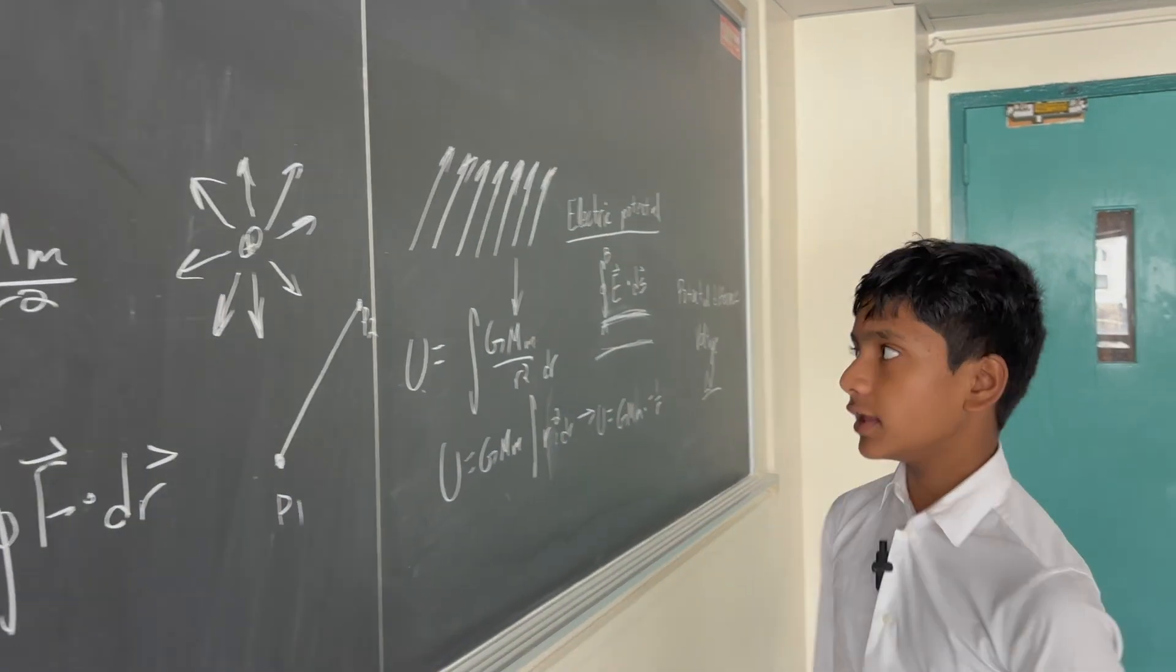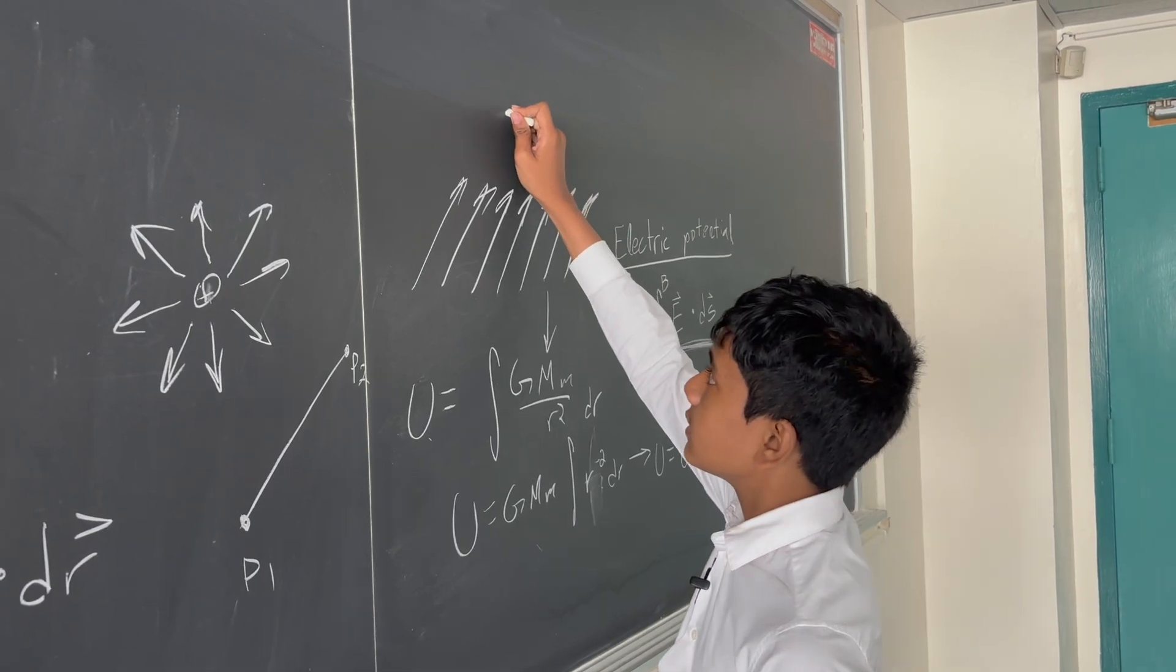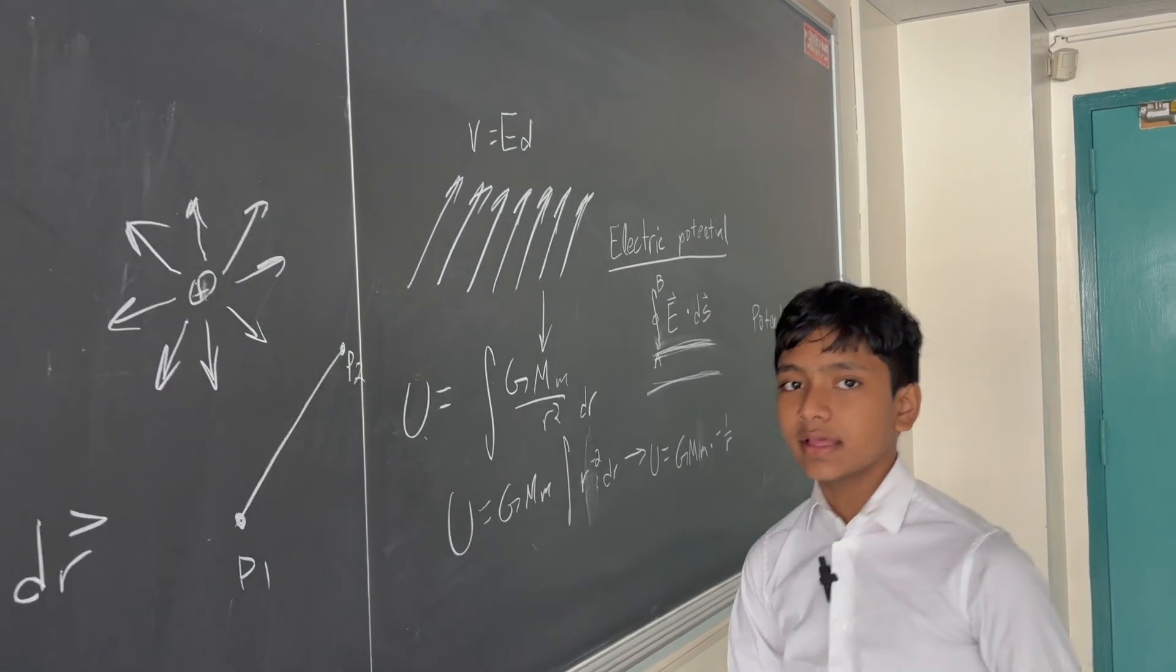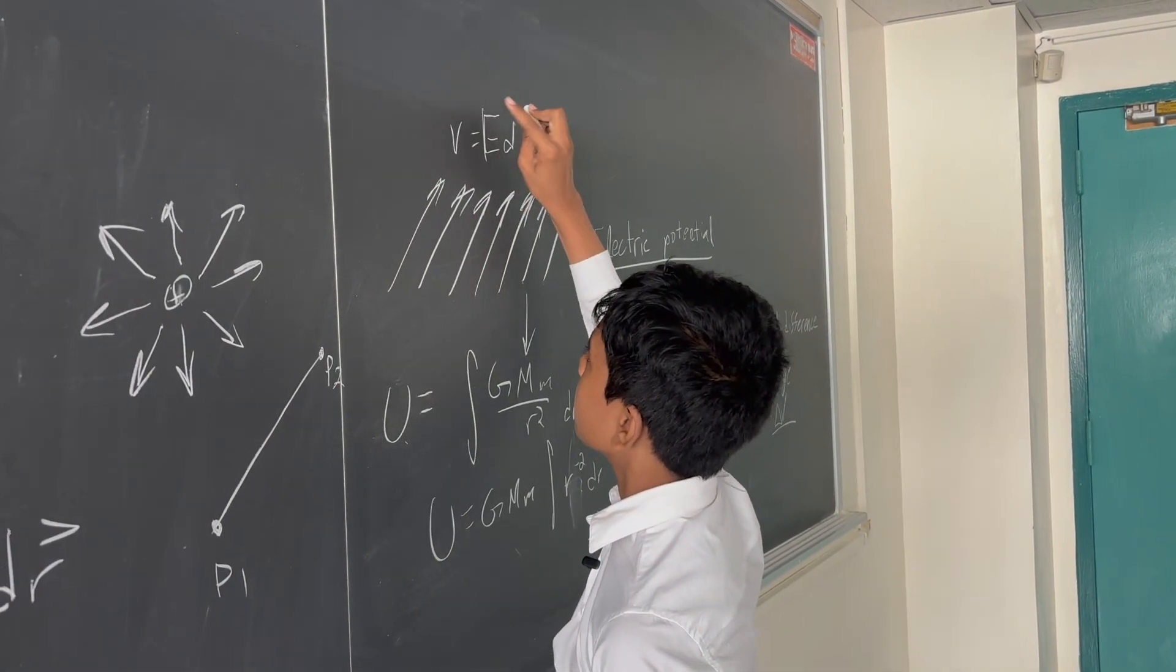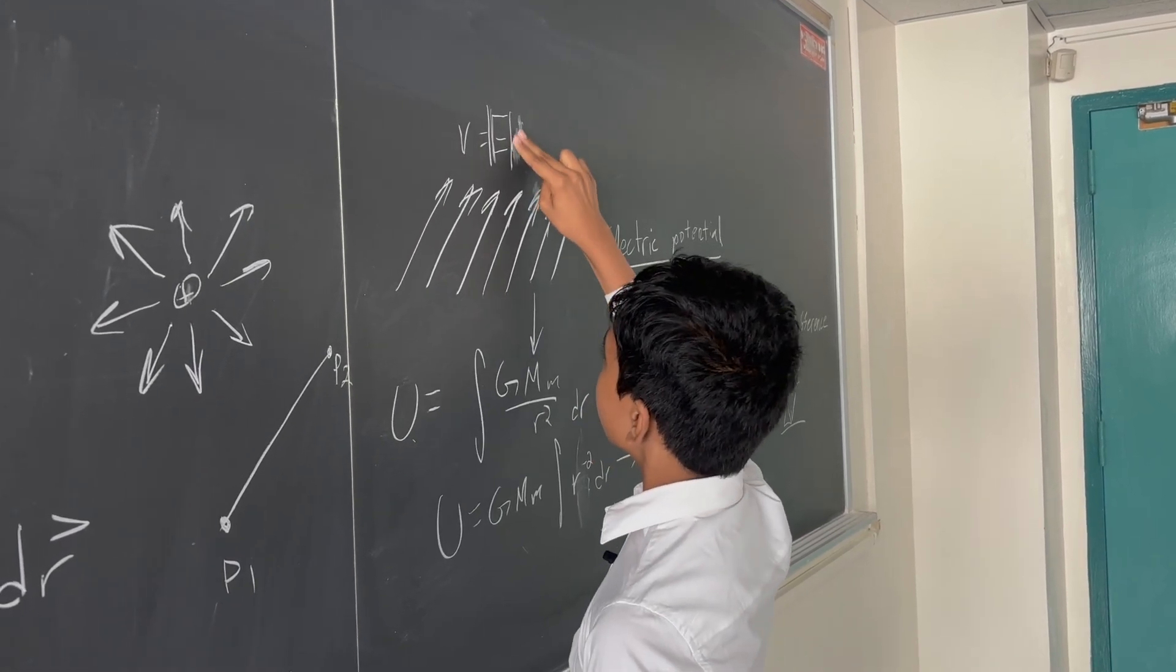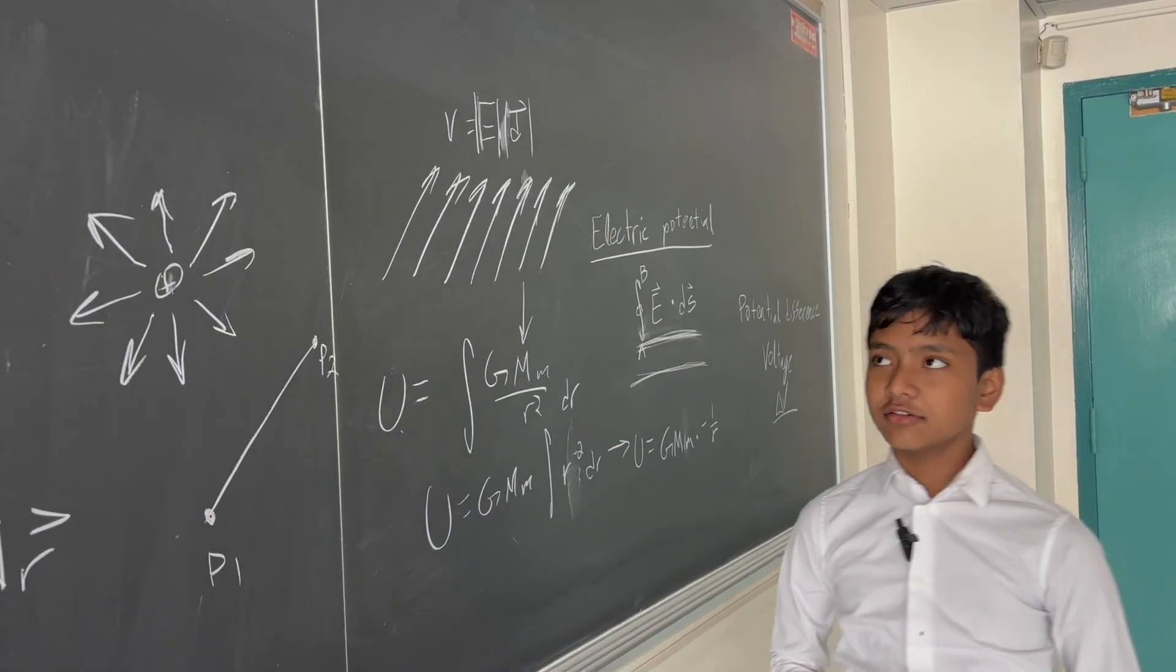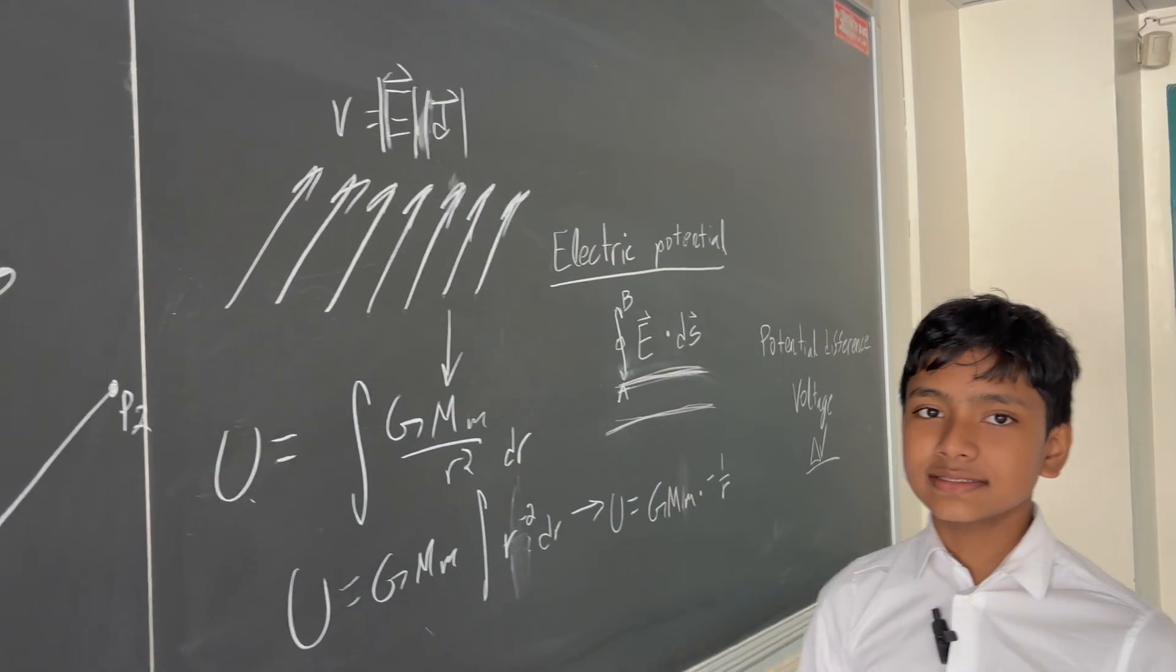And we've got a uniform electric field like this one. Then the voltage is just the electric field times the distance traveled. That's essentially it.